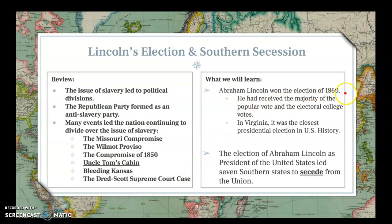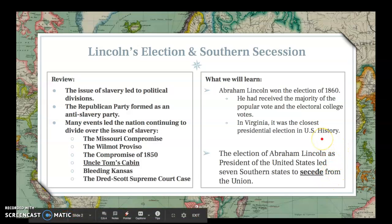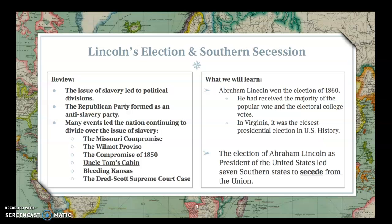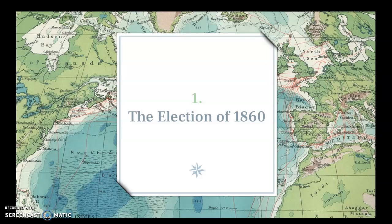Here's what we're going to learn today. We're going to learn about Abraham Lincoln, how he won the election in 1860, receiving the majority of the popular vote and the electoral college vote. Virginia is going to be a big part of this story for the rest of the year. And the election of Abraham Lincoln led to seven southern states seceding from the Union — meaning they decided they don't like where the country is heading and declared they were no longer part of the United States.